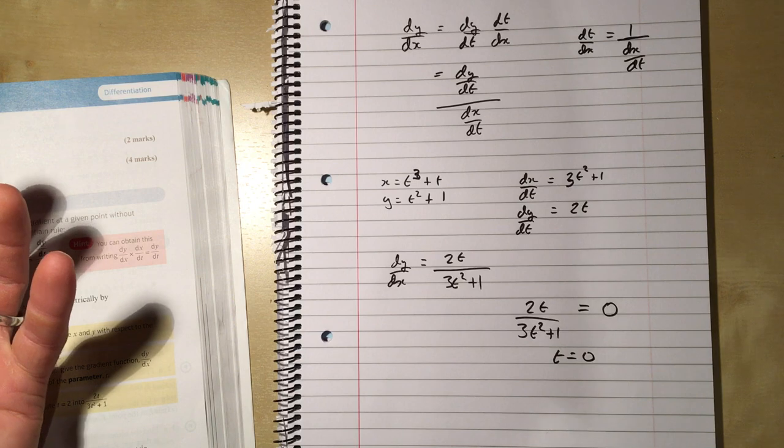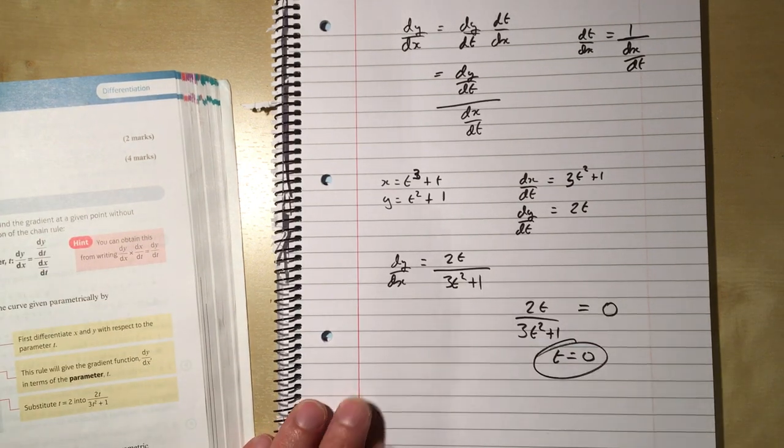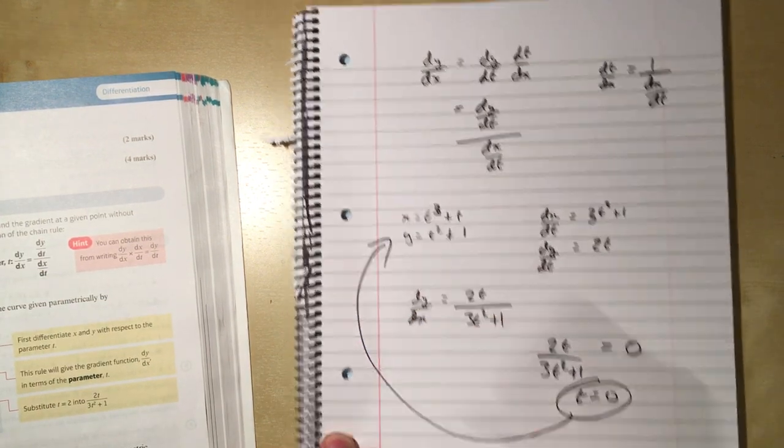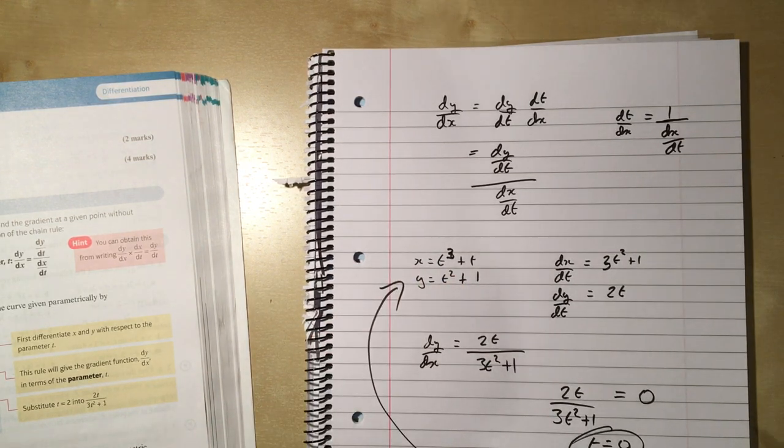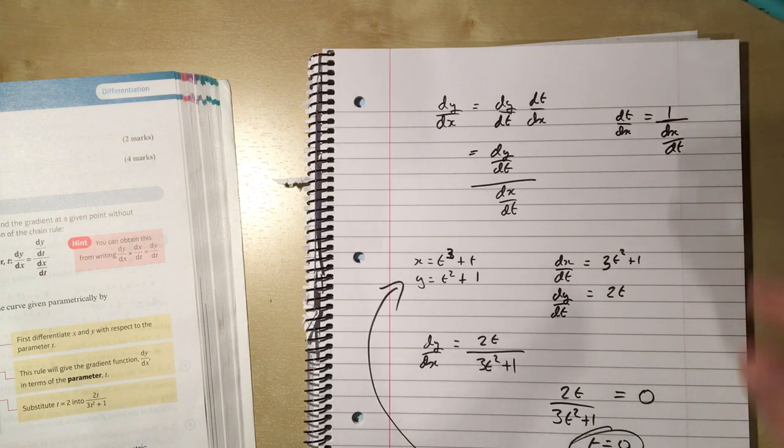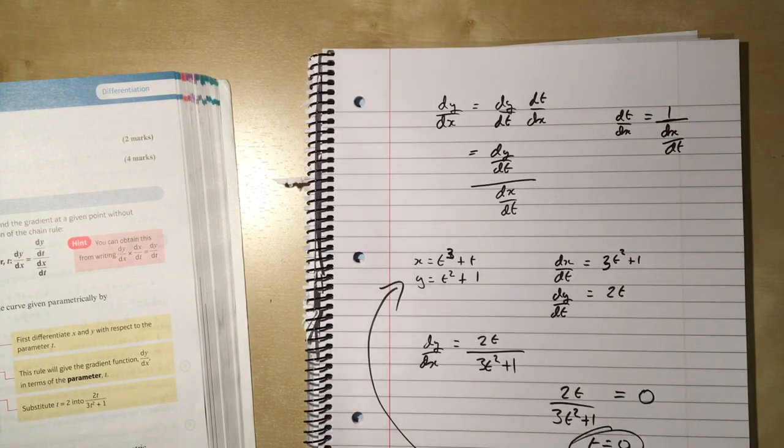Well, I haven't found the stationary point yet, but what I have found is that it's a stationary point when t equals 0, and I know how to convert t's into x values and how to convert t's into y values. So I've got to do a little bit more work, but the principle is still the same: to find the stationary point, put the first derivative equal to 0.